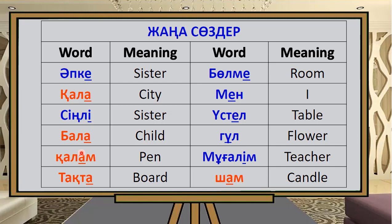Bala means 'child.' Qalam means 'pen.' Taqta means 'board.' Bulma means 'room.' Men means 'I' or 'me.' Osteel means 'table.'